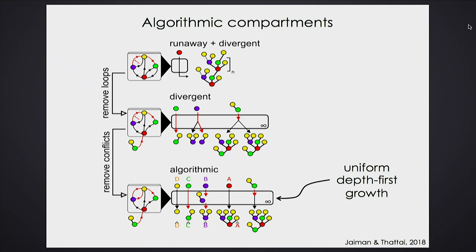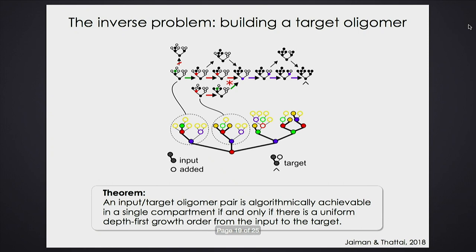These two conditions — depth-first and uniform branch opening — are equivalent to the idea of algorithmic compartments for this class of Markov processes. This is useful because I can work out uniform depth-first growth on the back of a napkin. That's the idea of proving theorems: you take complicated conditions that apply to a large class of models, reduce them to a testable certificate, and the real work is proving the certificate is necessary and sufficient.